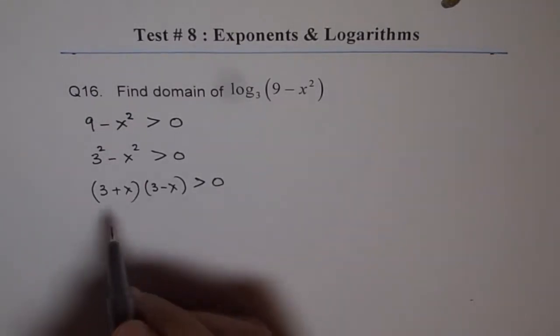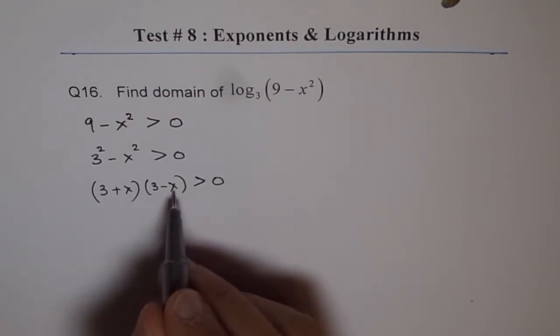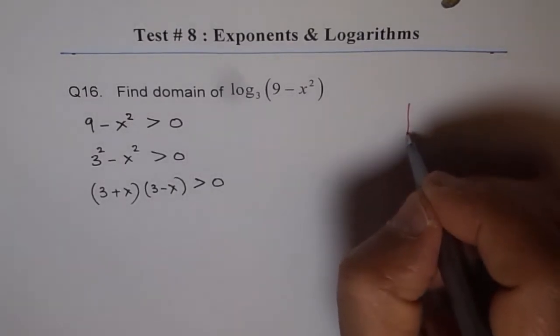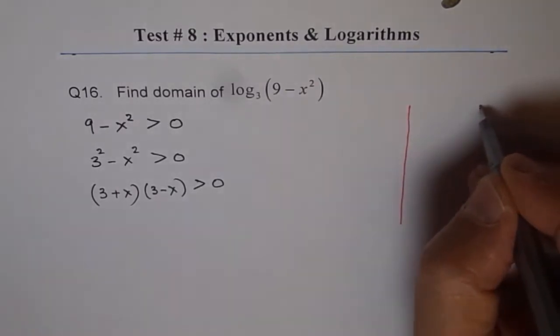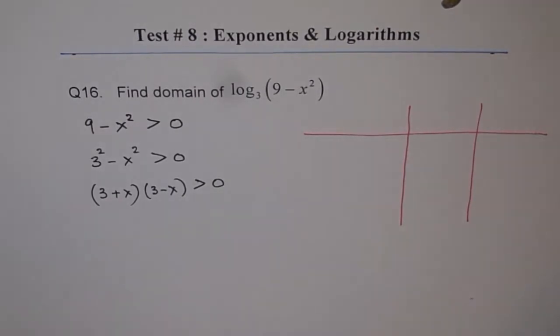As you can see here, we have 2 zeros. One is at minus 3, the other one is at plus 3. So we have to test our domain on either side of those 2 zeros.